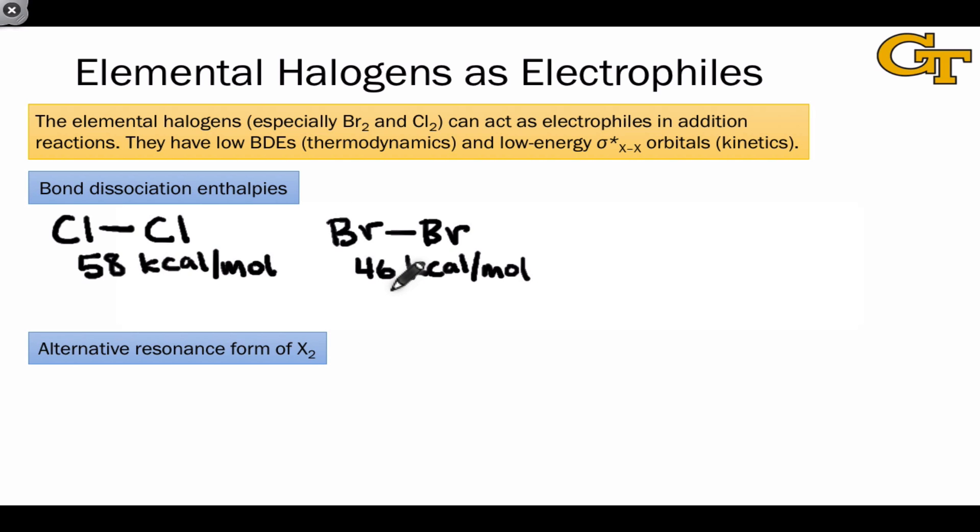This is fundamentally a thermodynamic argument, but we still need a mechanism to get from starting materials to products of addition. The basis of that mechanism is the low-energy sigma-star orbital for the bond connecting the two X atoms.